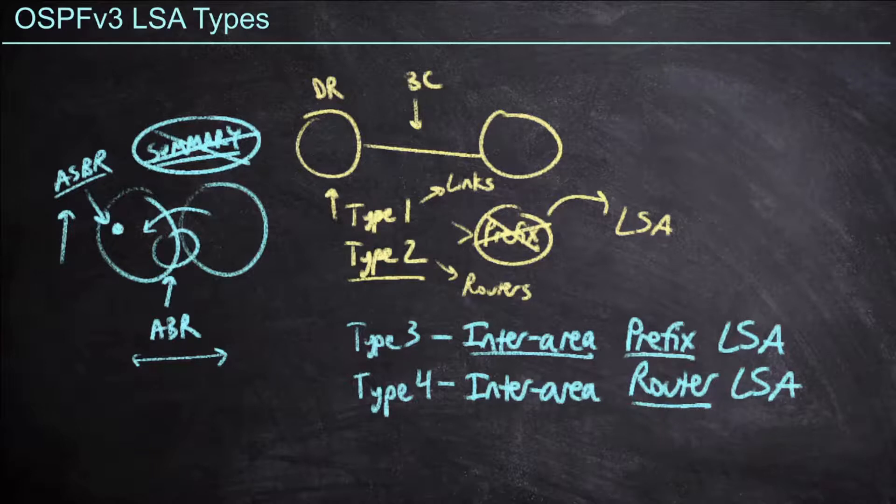Now fortunately types 5 and 7 are left alone, we have no functionality change, we have no name change, so with that we can move on to LSA type 8. Now type 8 is not an opaque LSA, in fact we don't have opaque LSAs in OSPF version 3.